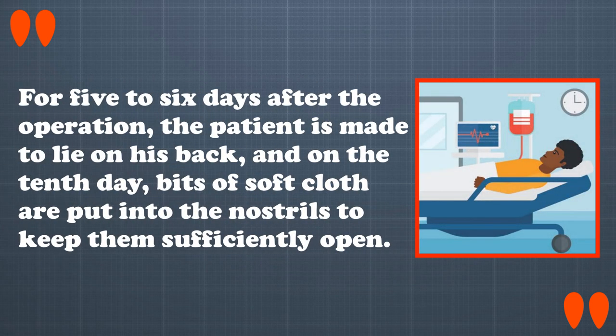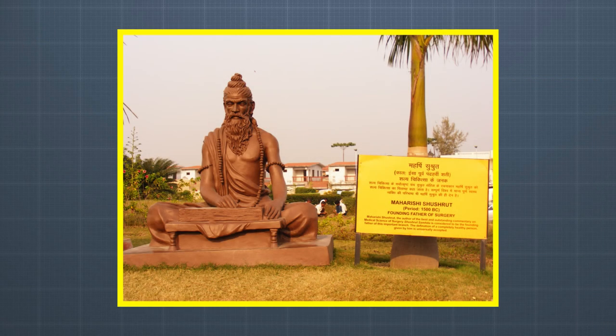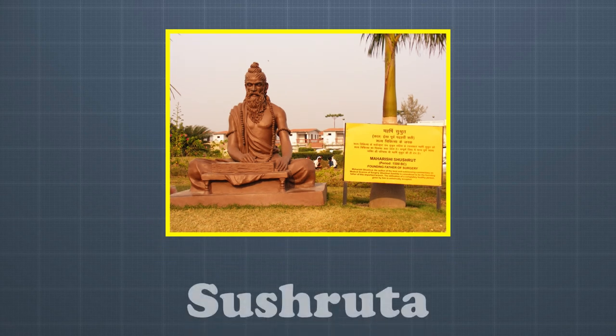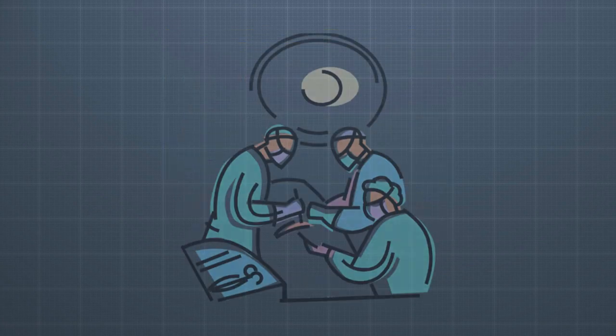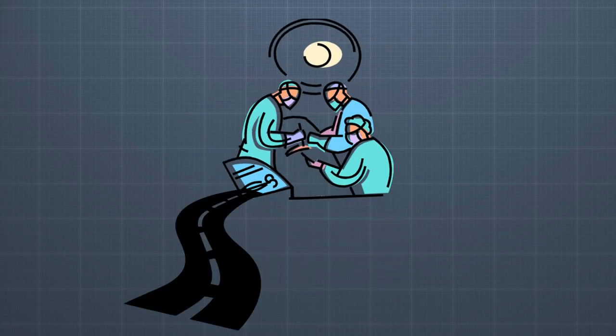For five to six days after the operation, the patient is made to lie on his back. And on the tenth day, bits of soft cloth are put into the nostrils to keep them sufficiently open. Further procedures can be followed if the nose is not in the required shape. This was Sushrut's procedure for performing a forehead flap rhinoplasty, and the same process is conducted today in modern medicine. As you can see, surgery has come a long way. The father of surgery, Sushrut, has been a crucial pioneer in the field of medicine.